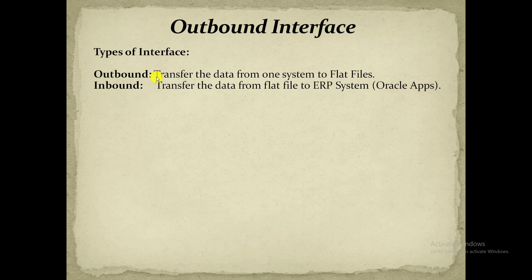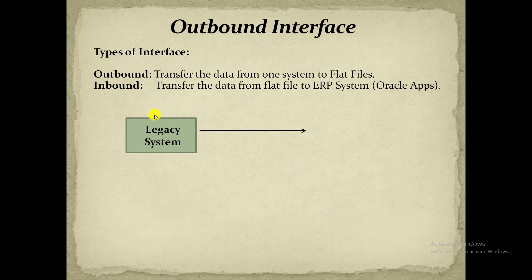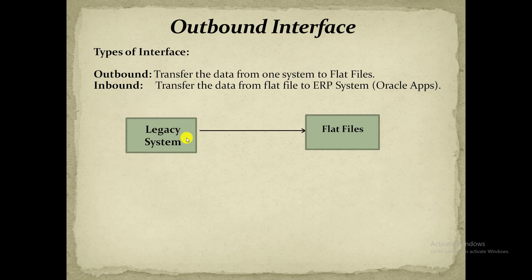So what is the outbound interface? It transfers the data from one system to a flat file. Suppose an organization has an ERP system — we will call it a legacy system. This legacy system has some data and they want to switch to Oracle Apps, so they want to transfer all the data from this legacy system. For that purpose they first transfer that data to a flat file. Flat files are CSV files — comma separated files — which are used to extract the data from the legacy system. Suppose we have 1000 tables in the legacy system, so we will create 1000 CSV files, and those files are called flat files. So outbound interface is getting the data out from the system in the format of flat files.